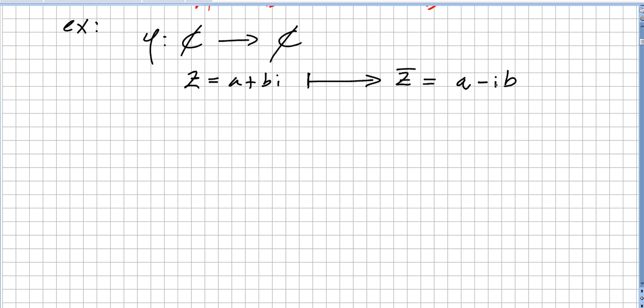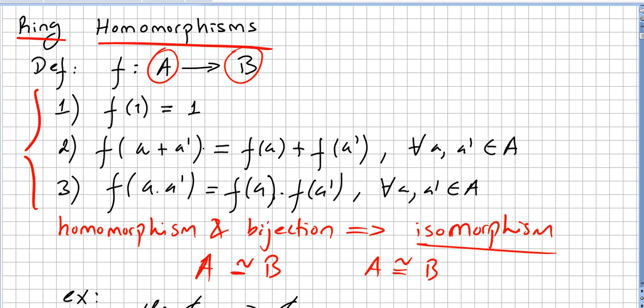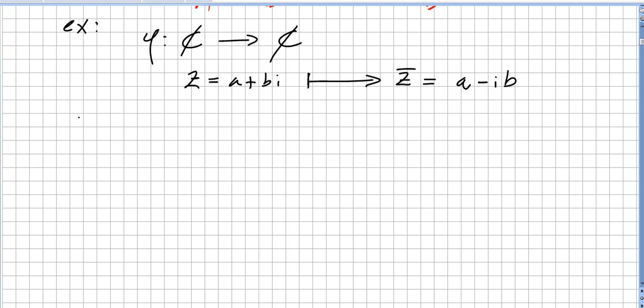So complex conjugation: these two rings are isomorphic. In order for them to be isomorphic we have to have a bijective homomorphism. So we have a homomorphism here because...